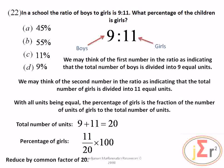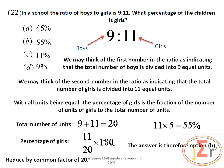The percentage of girls is 11 over 20 multiplied by 100. There is a common factor of 20 in the numerator and denominator. 20 into 20 is 1 and 20 into 100 is 5, so the result is 11 multiplied by 5, and the answer is 55 percent. The answer is therefore option B.